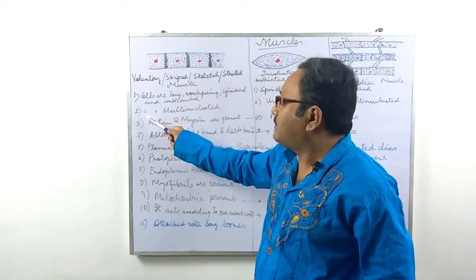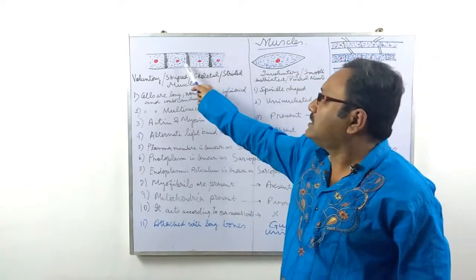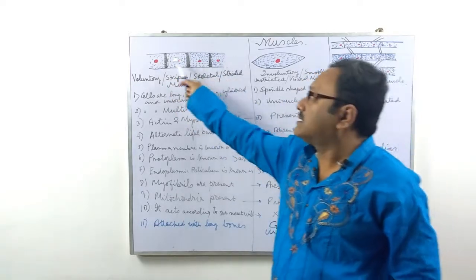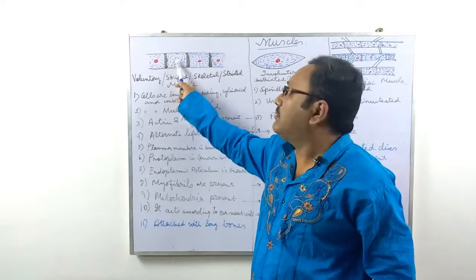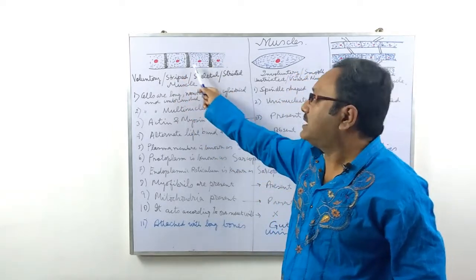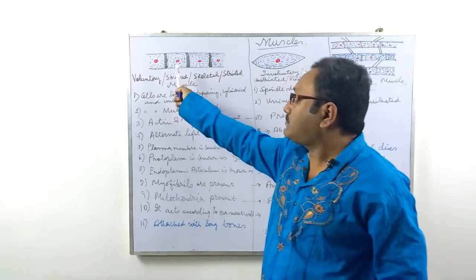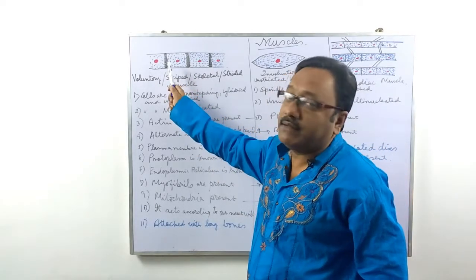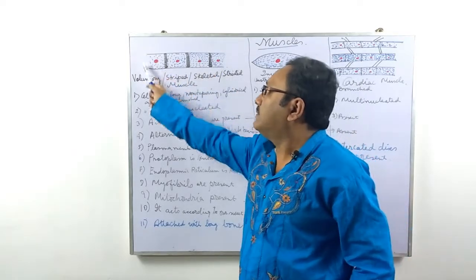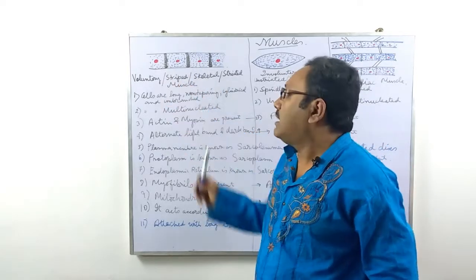Number two: the cells are multi-nucleated. These nuclei are present in a single cell. These are the alternate bands — alternate dark bands — so do not mistake them with the cell membrane. This is not at all the cell membrane. This is a single cell where more than one nucleus is present.